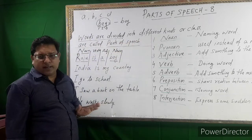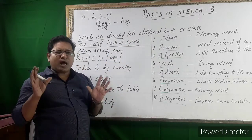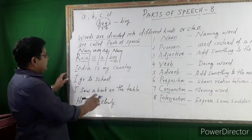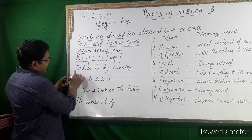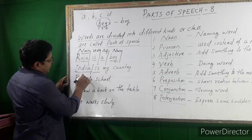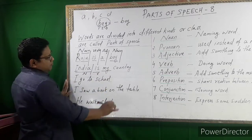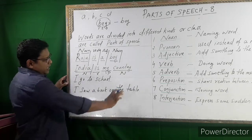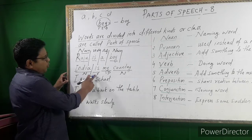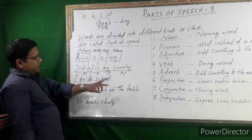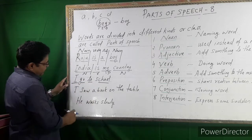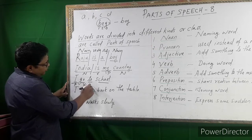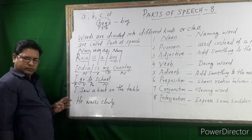Words are divided into different kinds of class — these are called parts of speech. 'India is my country.' India is a noun, 'is' is a verb, 'my' is a pronoun, and 'country' is also a noun. India is a proper noun and country is a common noun. 'I go to school.' 'I' is a pronoun, 'go' is a verb, 'to' is a preposition, and 'school' is also a noun.